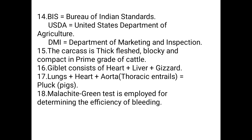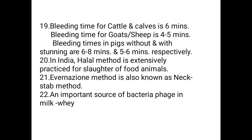A most commonly asked question: the malachite green test is employed for determining the efficiency of bleeding. Bleeding time by species: cattle and cow — 6 minutes; goat and sheep — 4 to 5 minutes; pigs without stunning — 6 to 8 minutes; pigs with stunning — 5 to 6 minutes.